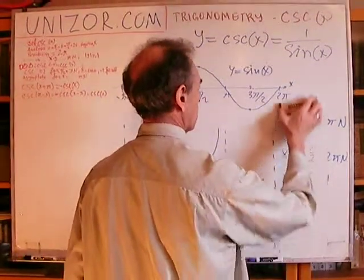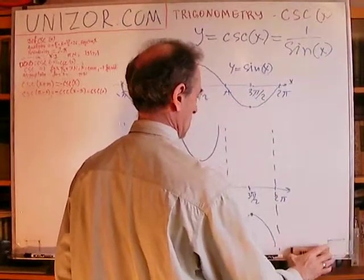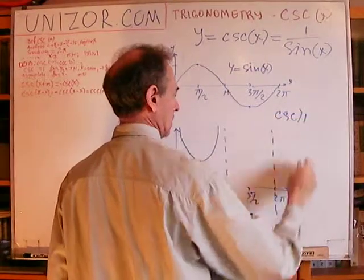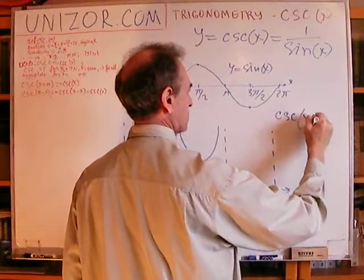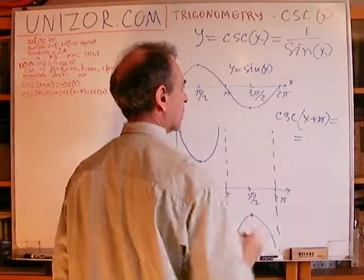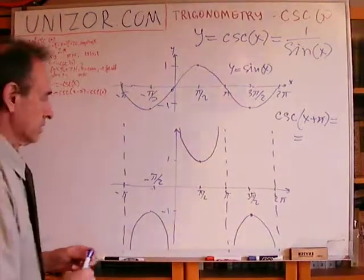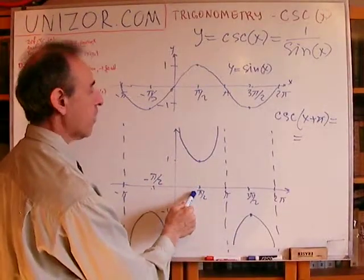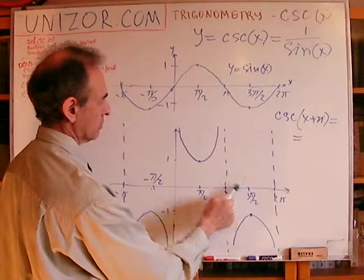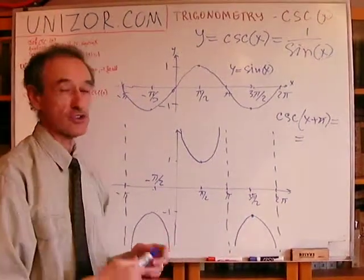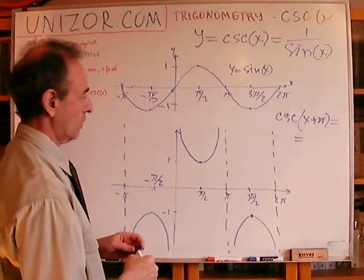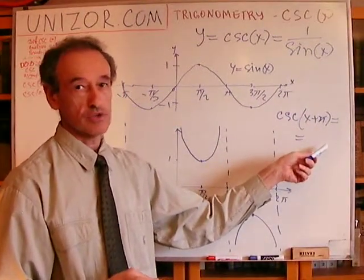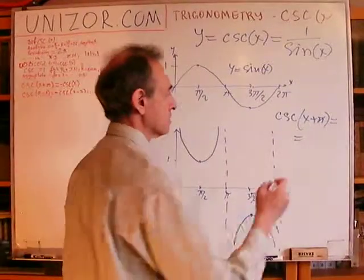What else is important? Csc(x + π) is equal to... let's think about it. From the graphical standpoint, if I add π, for instance in this case, add π to π/2, I will get 3π/2. So it changes the sign. The function changes the sign. Why is it obvious? Because it's 1 over sine, and we know that sine also changes the sign if we add π.